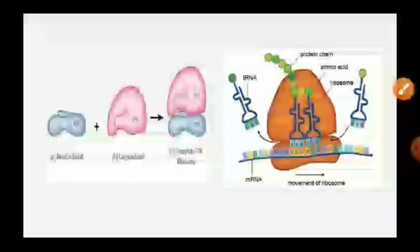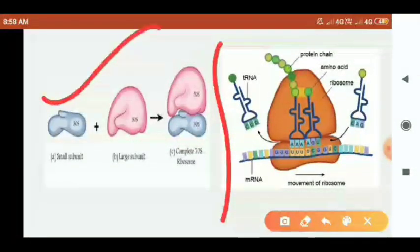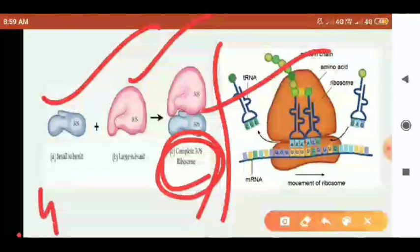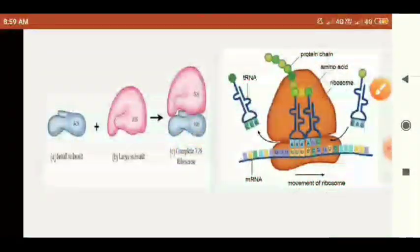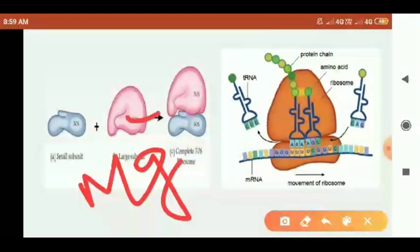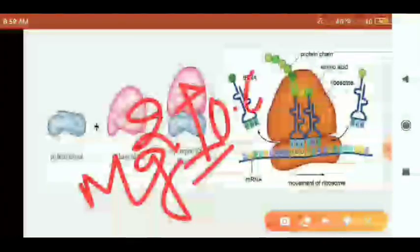For the 70S ribosome, the small subunit is 30S and the large subunit is 50S. For the 80S ribosome, 40S plus 60S equals 80S. This ribosome structure is important for protein synthesis. The favorable condition for protein synthesis requires magnesium (Mg²⁺), with a magnesium concentration of 0.001 mol.